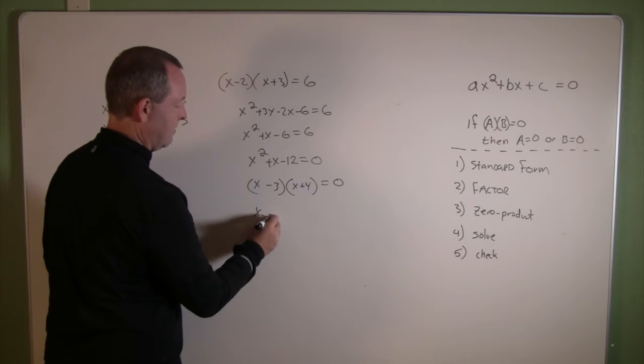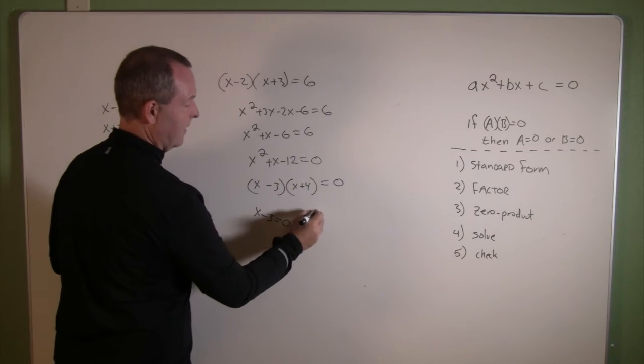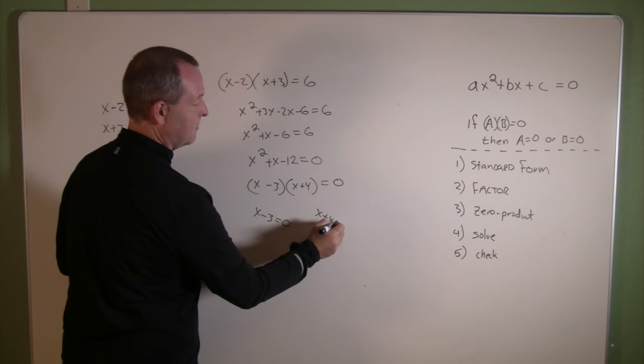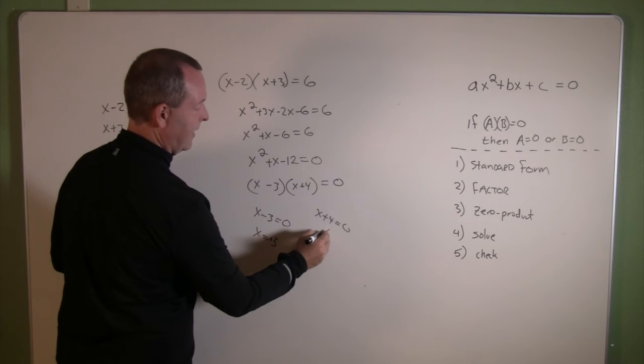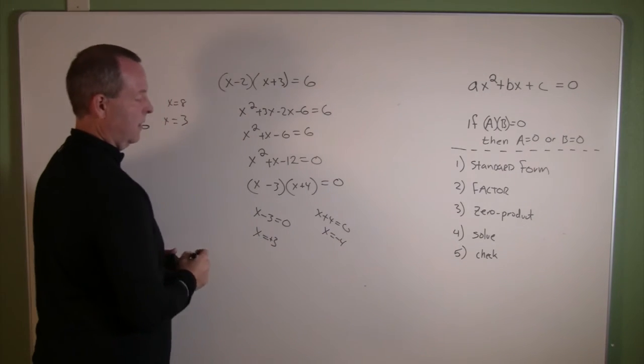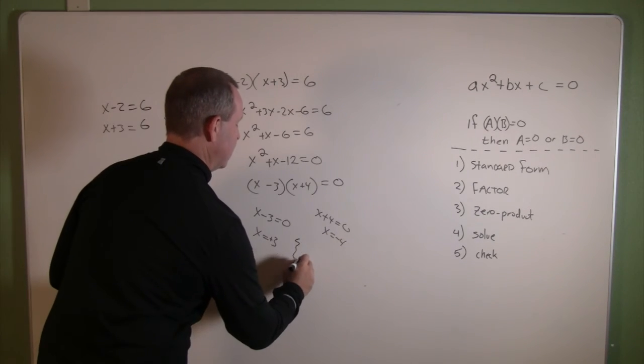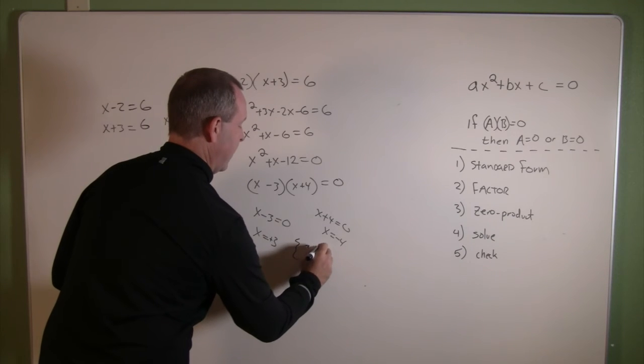And for that to be true, x-3 has to equal zero, or x+4 has to equal zero. Looks like x equals 3 and x equals negative 4. So my solution set, or my solutions, are 3 and negative 4.